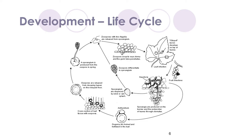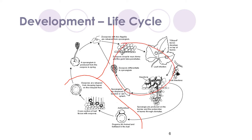Next, let's look at the life cycle of a strain of downy mildew. We can divide it into three main sections including overwintering, the sexual reproduction cycle, and the asexual reproduction cycle.